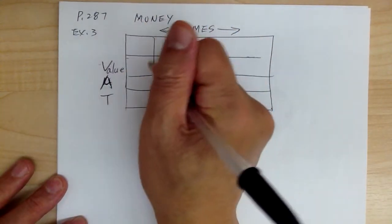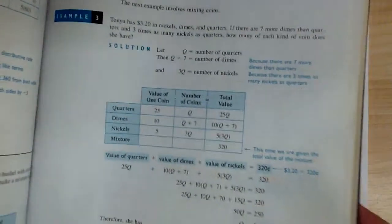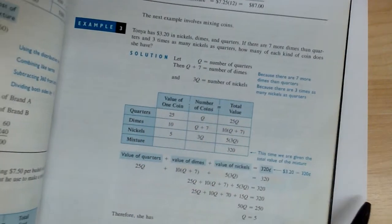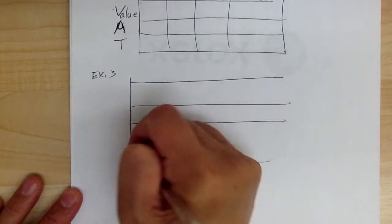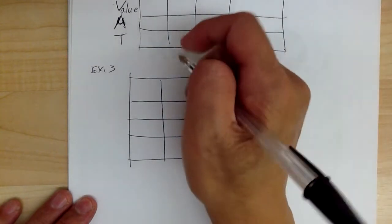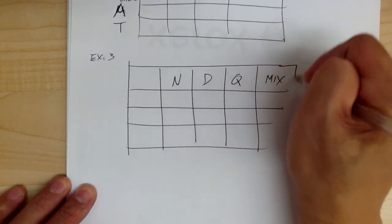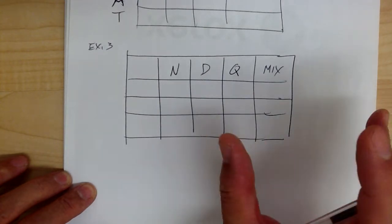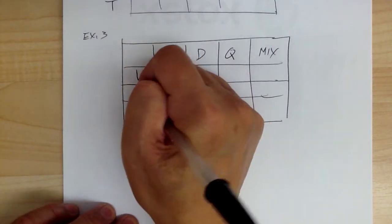Example 3 says Tanya has $3.20 in nickels, dimes, and quarters. So there are three kinds of coins. You have nickels, dimes, and quarters as your column headers, and the mix goes on the right. This is similar to the food mixture problem, but now you're mixing coins. Value is easy: a nickel is worth 5 cents, a dime is worth 10 cents, and a quarter is worth 25 cents. You don't need a value for the mix column.